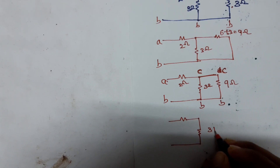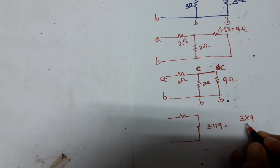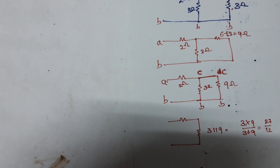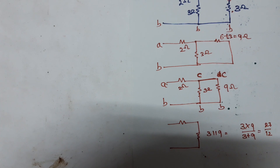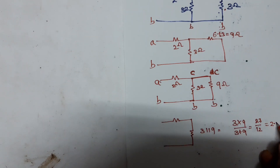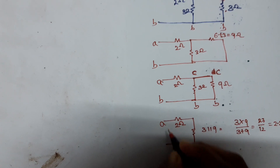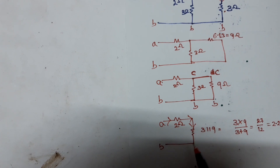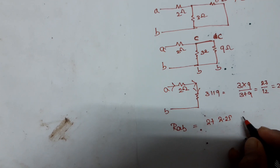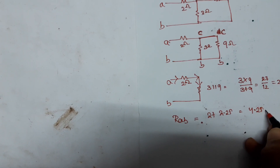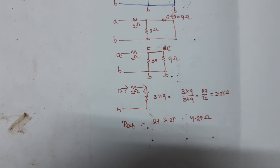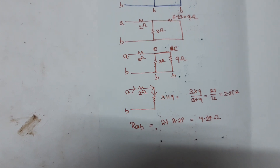We modify: 3 ohm parallel with 9 ohm equals (3 × 9) / (3 + 9) = 27/12 = 2.25 ohm. This 2.25 ohm and the 2 ohm are connected in series because the same current flows through them. So total R_AB equals 2 plus 2.25, which equals 4.25 ohm. In our next video we learn some more difficult problems. Thank you for watching, please like and subscribe.